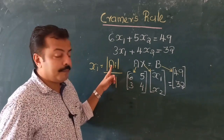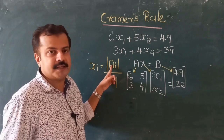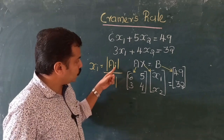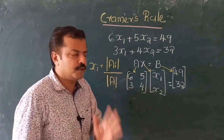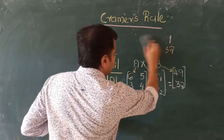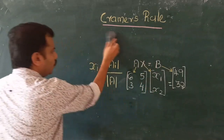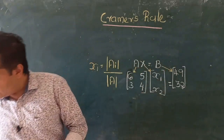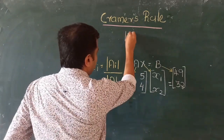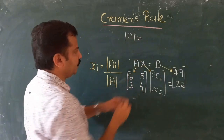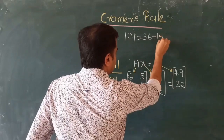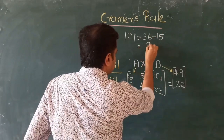The special matrix Ai is formed by replacing the column of coefficients corresponding to the i-th variable with the constant vector b. First, let's calculate the determinant of A: 6 times 4 minus 3 times 5 equals 24 minus 15, so the determinant of A is 9.